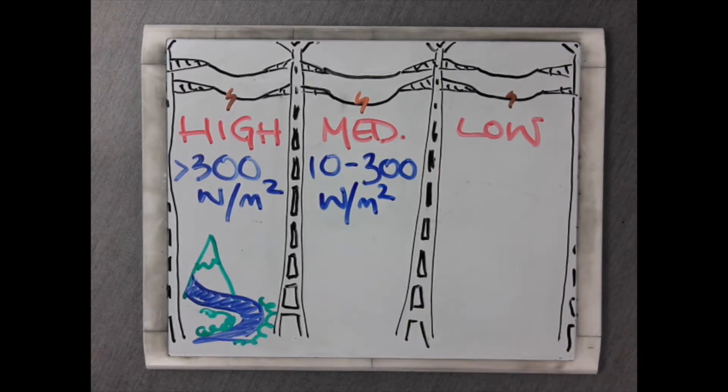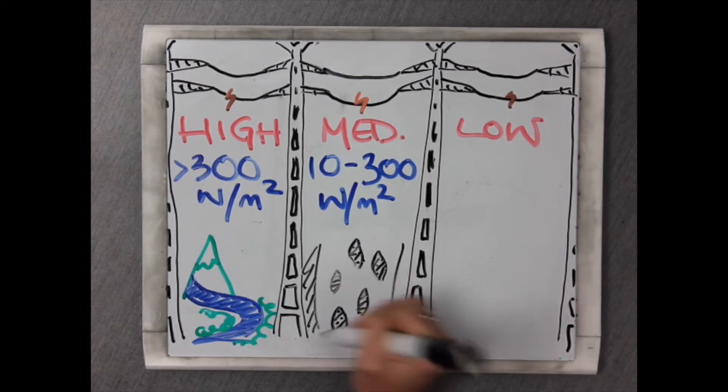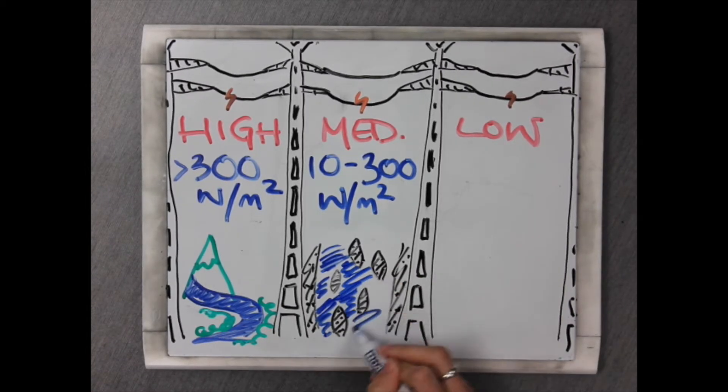Medium energy systems sit at an energy between 10 and 300 watts per meter squared and are commonly associated with braided and meandering rivers.